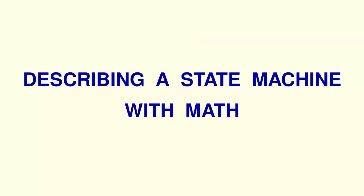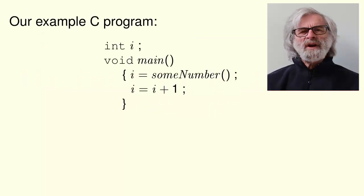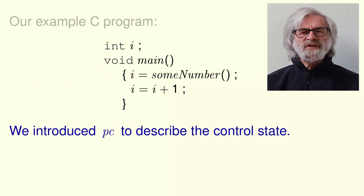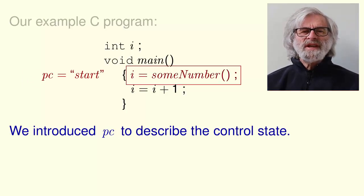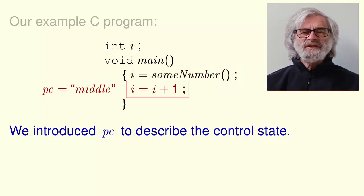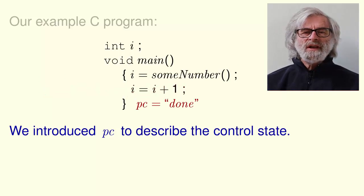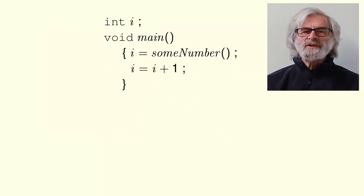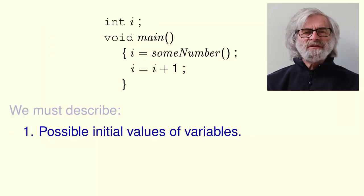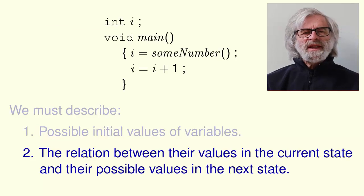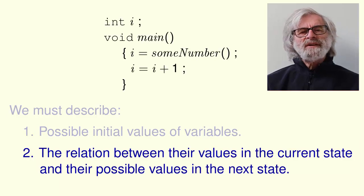Describing a state machine with math. Remember our example C program. Recall that we introduced the variable PC to describe the control state. PC equals the string start means that this is the next statement to be executed. PC equals middle means that control is here. And PC equals done when execution has terminated. To describe this program, we must describe two things. The possible initial values of the variables, and what the relation is between the values of the variables in the current state and their possible values in the next state.